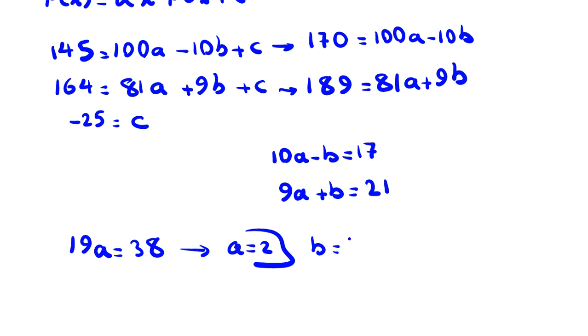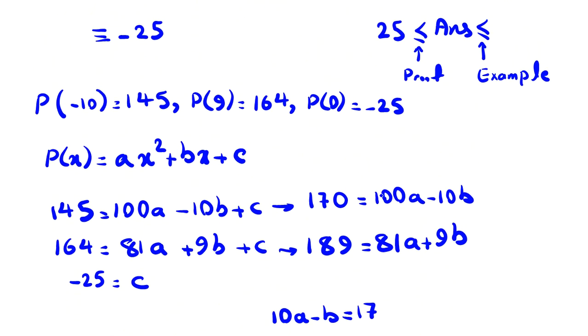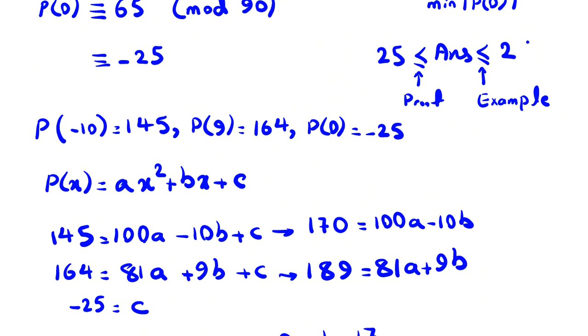And c is -25. So P(x) is 2x² + 3x - 25. And in this case, it satisfies P(-10), P(9), and P(0) is -25. So we found one example. By this example, the answer is at most 25. So the answer is exactly equal to 25.